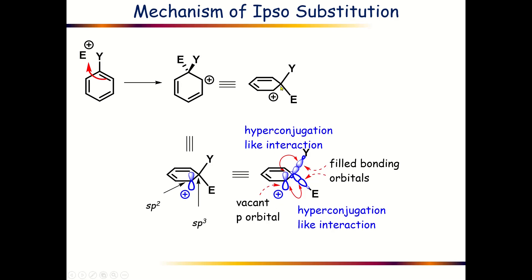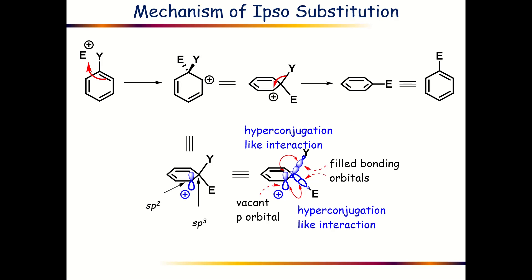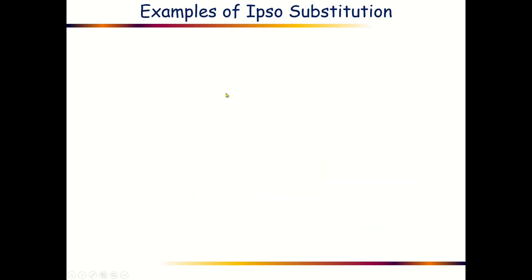If we consider this intermediate as drawn here, the next step of the reaction will definitely be the elimination or leaving of this Y group as Y+ from this carbocationic intermediate or sigma complex. This will be achieved when these two bonding electrons of this carbon-Y bond will form a double bond, as shown here using curly arrow notation, and then we will get our desired substituted product — and the substitution is obviously in the ipso position. This is the overall mechanism of the ipso substitution reaction.